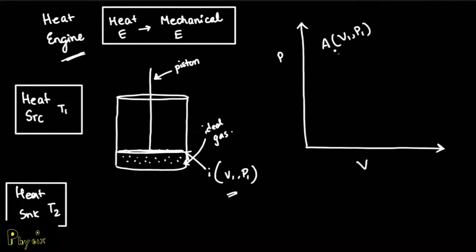For the first step, the Carnot's engine goes from point A to state point B. For this to happen, our Carnot's engine is placed in our heat source. Since our engine is placed in our heat source, it goes from V1, P1 to V2, P2, where it undergoes an isothermal expansion because the temperature is constant.